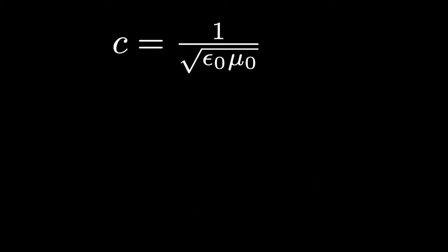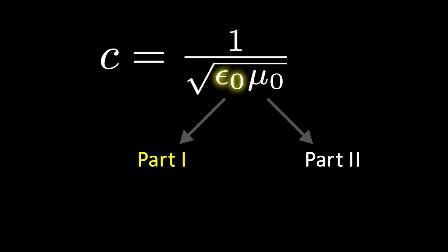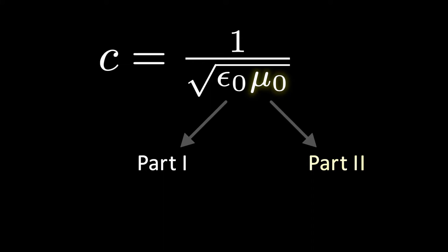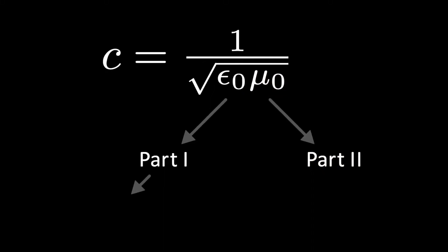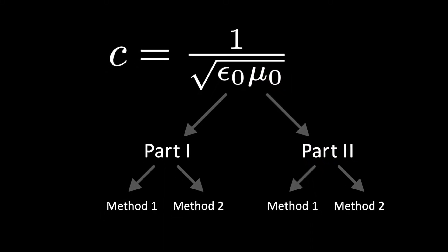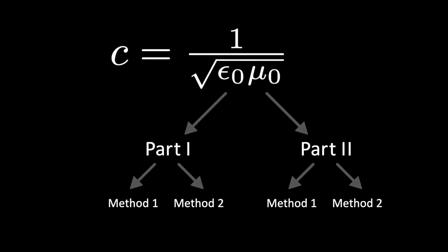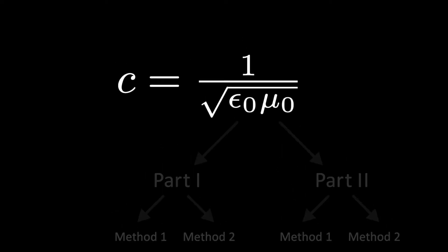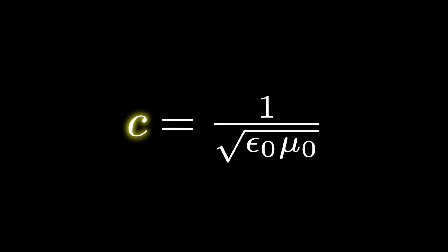Today's experiment has two parts. In the first, you will measure epsilon-naught, and in the second, you will measure mu-naught. In each part, you will have the opportunity to do the measurement in two different ways and compare your results. Then you'll be able to combine your results to get a value for c, the speed of light in vacuum. At the end of the video, you can see how close you got to the actual speed of light.